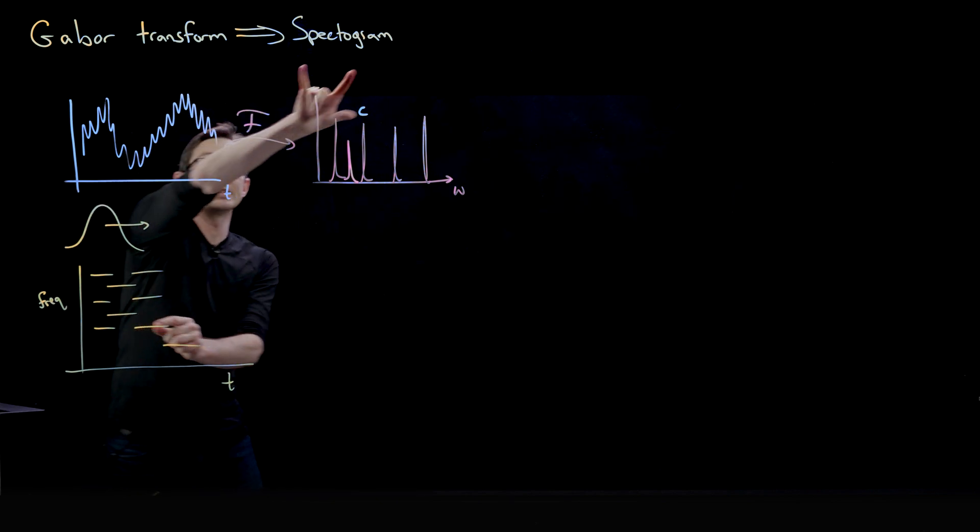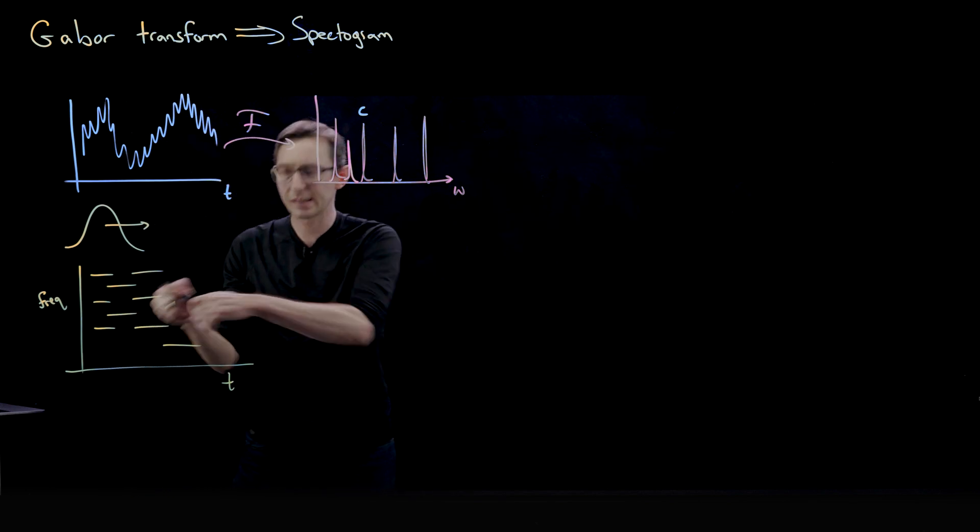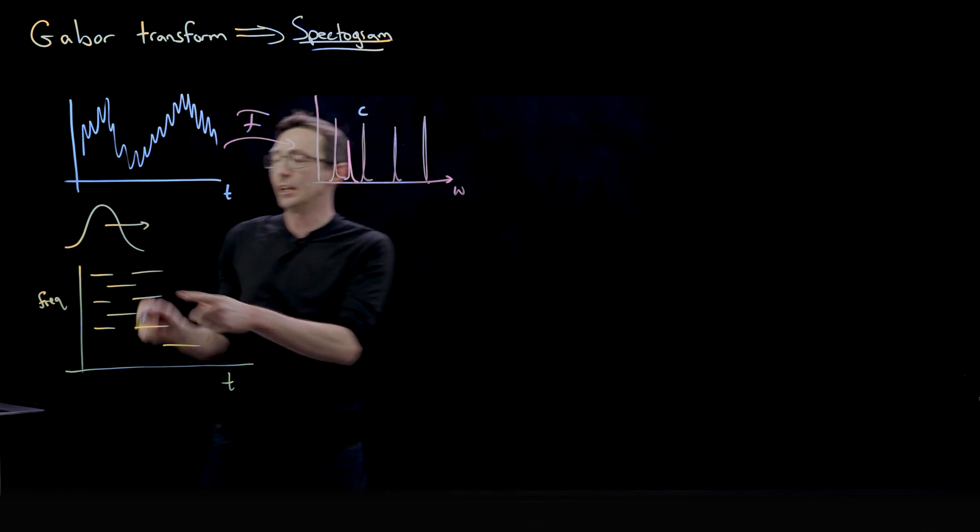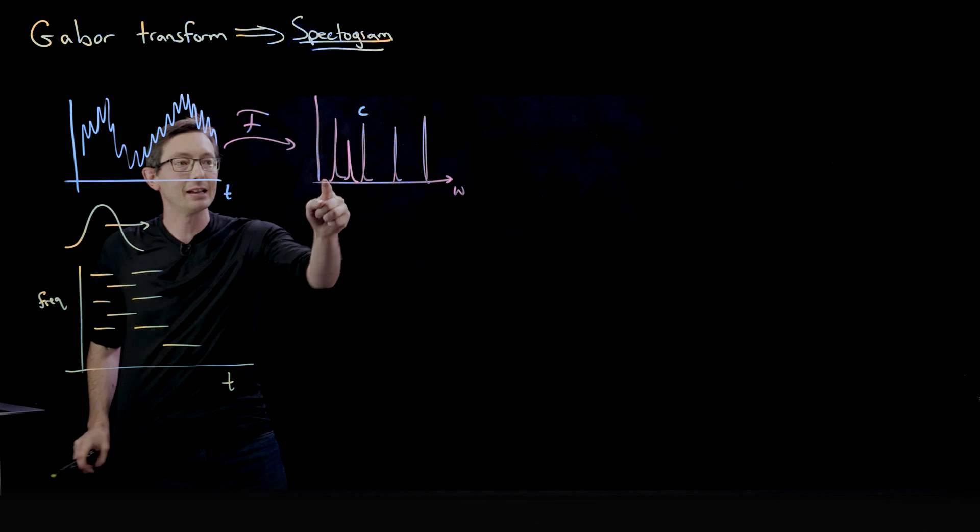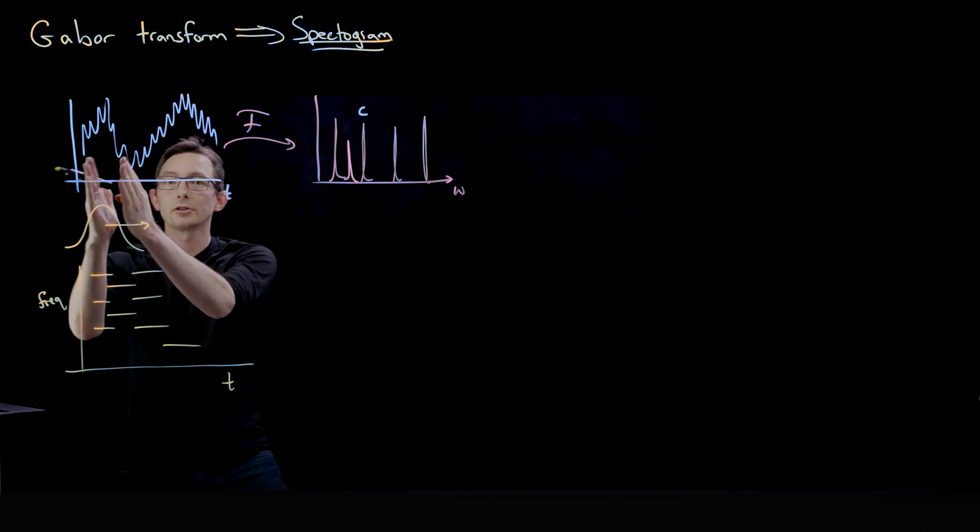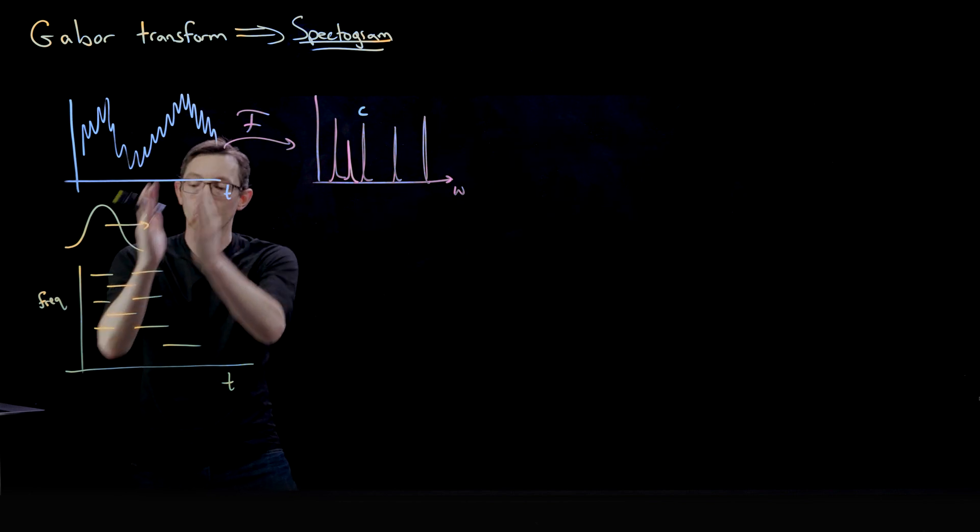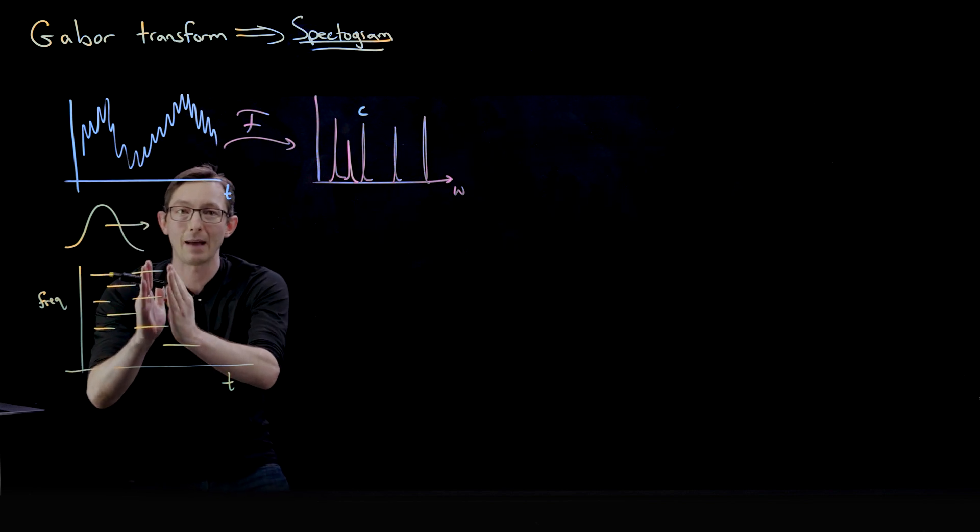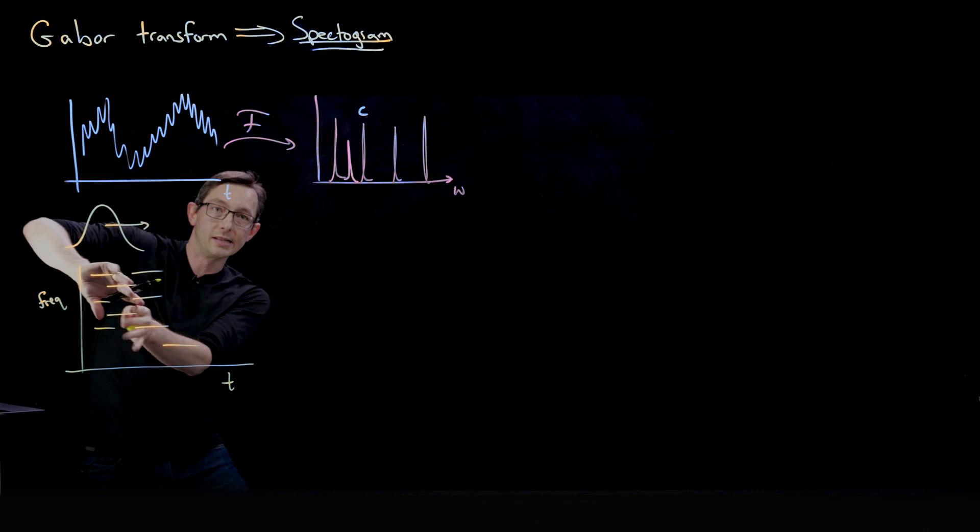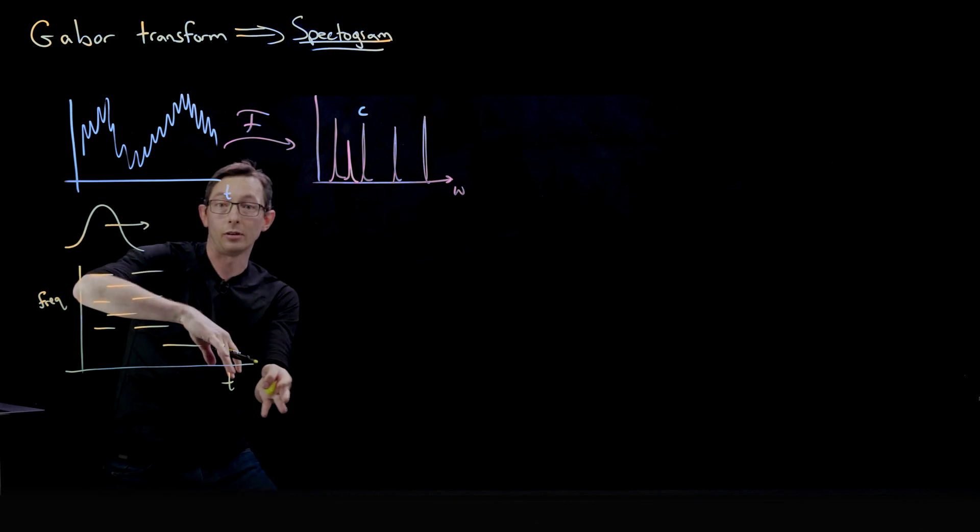So each vertical strip of this spectrogram, so this is my spectrogram, and each vertical strip is basically a power spectrum for a little short window of time. And I have this moving window, this is sliding across, giving me a sliding power spectrum of what frequencies are being played as time evolves.